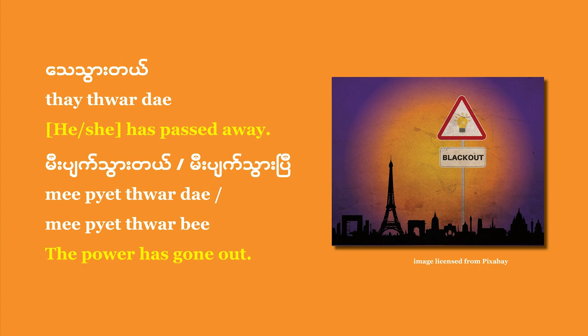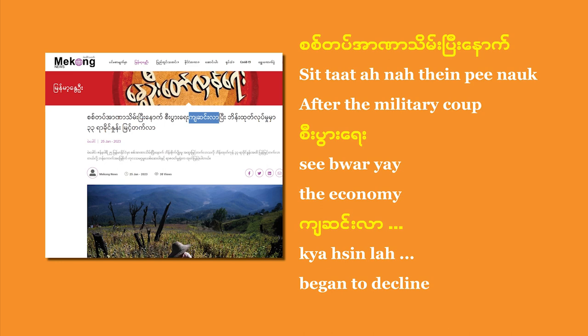Now that you understand the difference, let's go back to the two headlines. In the first, it reads: se anah zeng bi nao, si boye cha sen la. That means: after the military coup, the economy cha sen la. The verb cha sen — to decline or to dip — is followed by la. That means it's starting to decline, beginning to decline. It looks like it's going to get worse. It's the beginning, or the developing stage, of the decline of the economy.